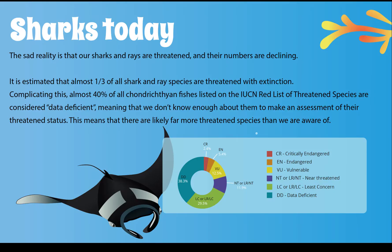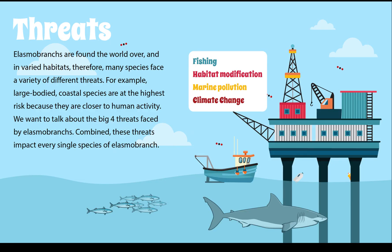The sad reality is that our sharks and rays are threatened and numbers are declining. It is estimated that almost one third of all shark and ray species are threatened with extinction and could disappear from our oceans forever. Compounding this, almost 40% of all chondrichthyan fish listed on the IUCN Red List are considered data deficient — meaning we don't have enough information to make predictions on their population numbers. When we talk about the big four threats faced by elasmobranchs, we are talking about fishing, habitat modification, marine pollution, and climate change.